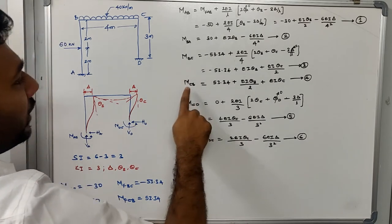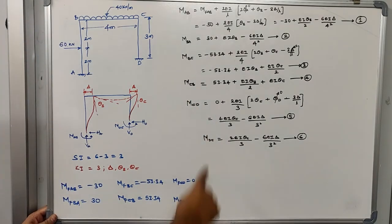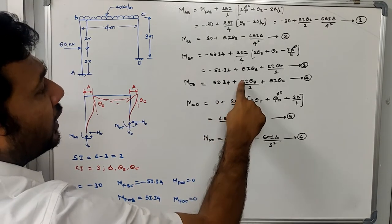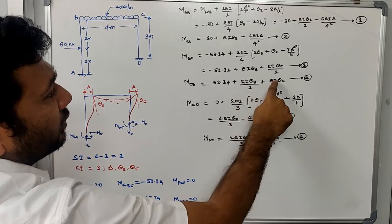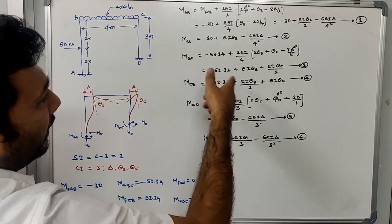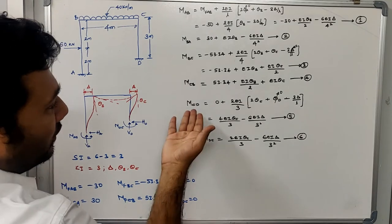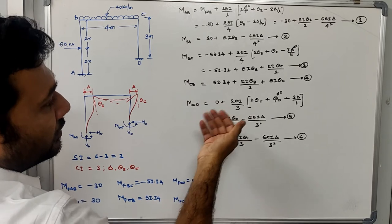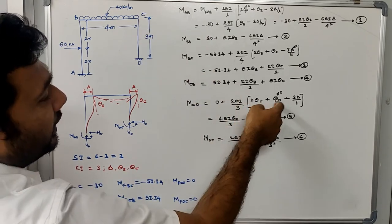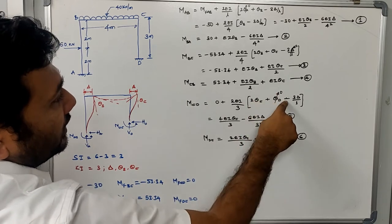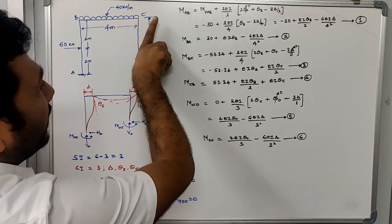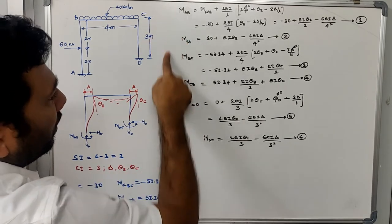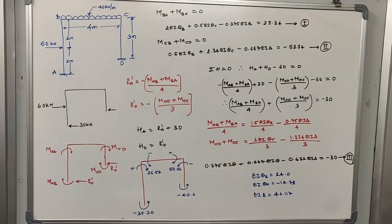For M_CB: M_CB = MF_CB + EI·θ_B/2 + EI·θ_C, where MF_CB = 53.34. For M_CD and M_DC: there is no fixed end moment so that term is zero. θ_D = 0 due to fixity, but the −3Δ/L term remains because this column is subjected to translation. After simplifying, these give all the slope deflection equations.